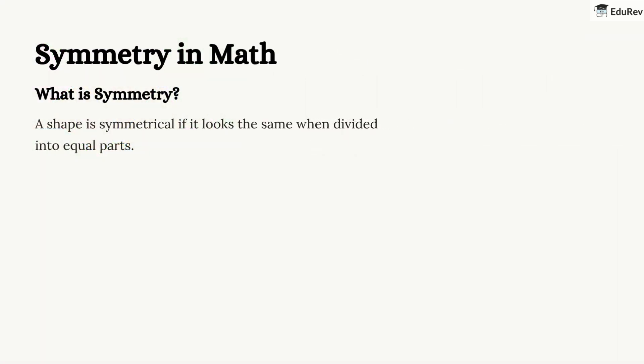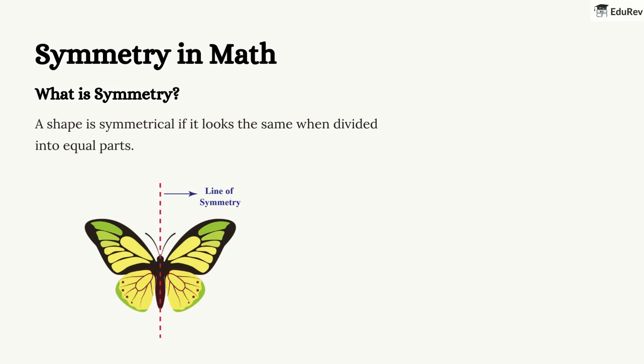Let's talk about symmetry. When we say something is symmetrical, it means it looks the same when divided into two equal parts. For example, think about a butterfly. If you draw a line right down the middle of the butterfly, both sides will look the same. The line that divides it into two equal parts is called the line of symmetry.